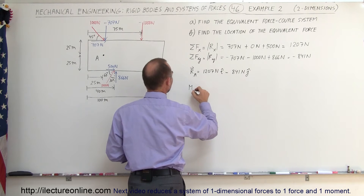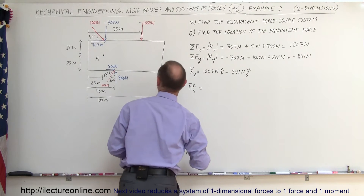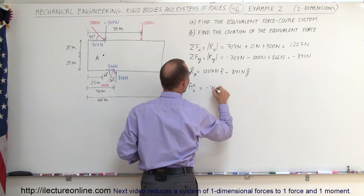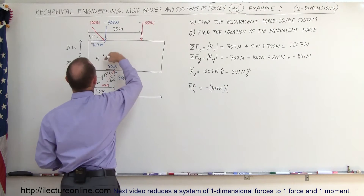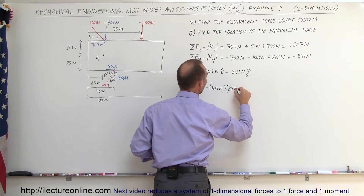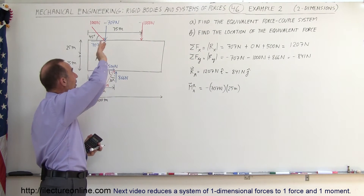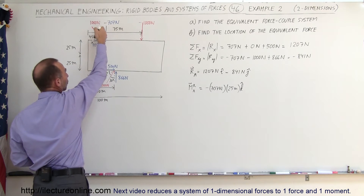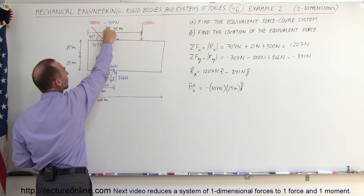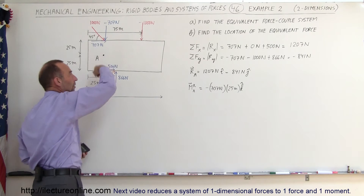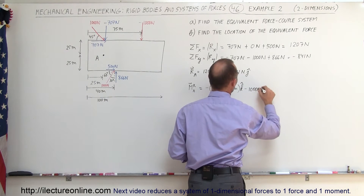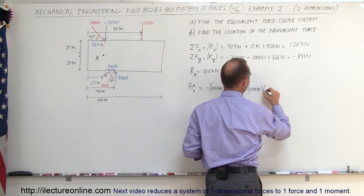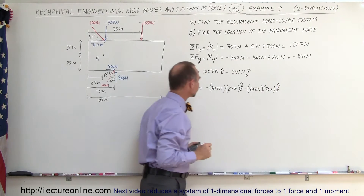For the moment resultant at point A: the X component of the first force causes a clockwise (negative) motion, so that's minus 707 Newtons multiplied by 25 meters in the negative K direction. The Y component of the first force has its line of action passing through point A, so it contributes no moment. The second force of minus 1000 Newtons acts at a distance of 75 minus 25 = 50 meters, also in the K direction.